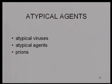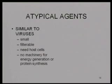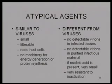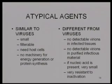These are called atypical agents because they don't look like typical viruses. They are similar to viruses in that they're small, will go through filters that distinguish bacteria from viruses, and need host cells to grow — they have no machinery for energy generation or protein synthesis. But we can't find detectable virions. People have looked long and hard; nobody has found anything that looks like a typical virion, even when you purify the infectious material from these brains.